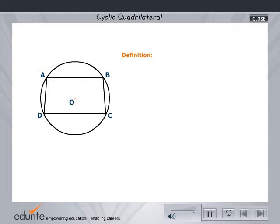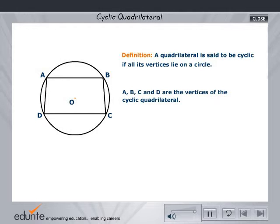Definition of a cyclic quadrilateral: A quadrilateral is said to be cyclic if all its vertices lie on a circle. In the figure, A, B, C and D are the vertices of the cyclic quadrilateral.